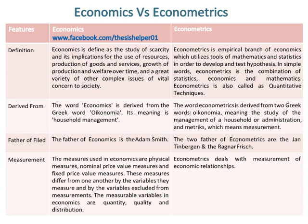The measures used in economics are physical measures, nominal price value measures and fixed price value measures. These measures differ from one another by the variables they measure and by the variables excluded from measurements. The measurable variables in economics are quantity, quality and distribution, while econometrics deals with measurement of economic relationships.